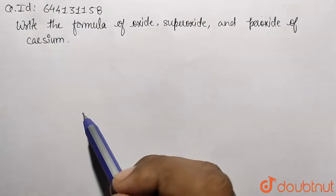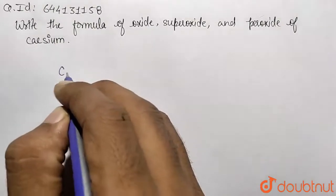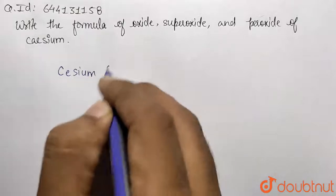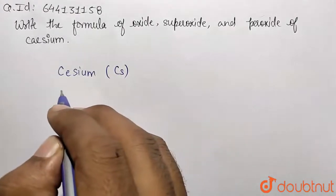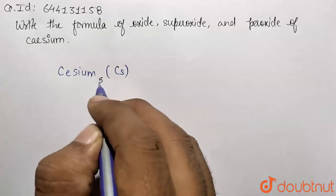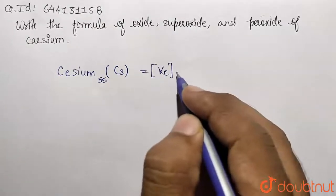Cesium belongs to the s-block elements and is from the first group. Cesium is represented by the symbol Cs. Its configuration - the atomic number is 55 - is [Xe] with only one electron in the valence shell, 6s¹, so it shows plus one oxidation state by losing this electron.